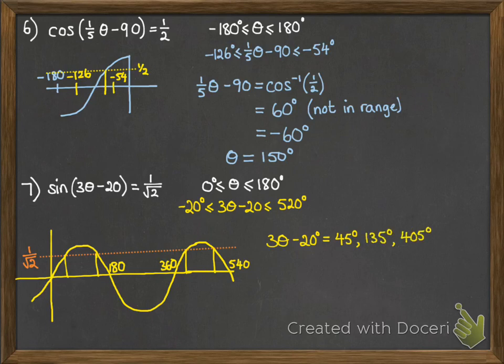So then, using the symmetry of the graph and the fact that it repeats, we are going to get all four of those values. And then θ, we take each of those values, we add on 20 and divide by 3 to get our θ value for each of them.